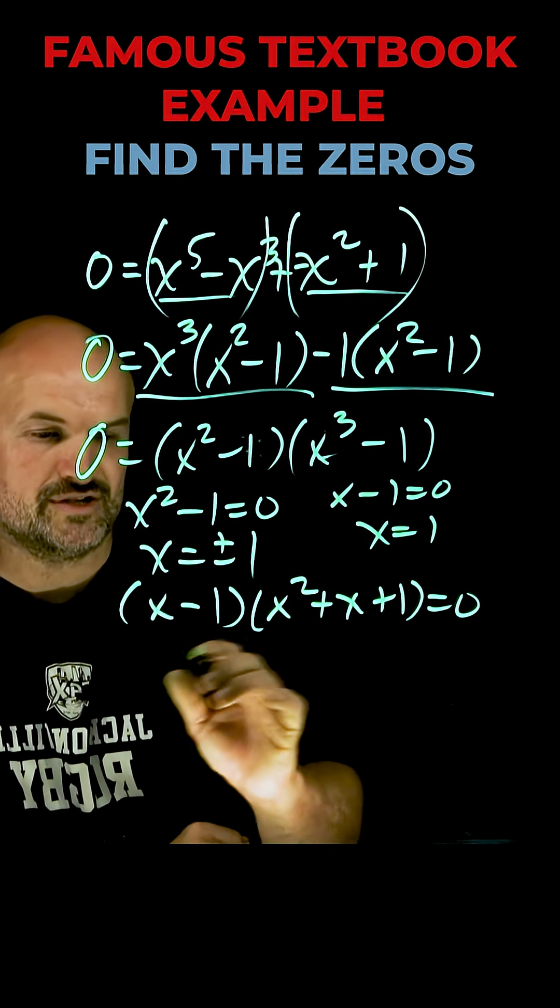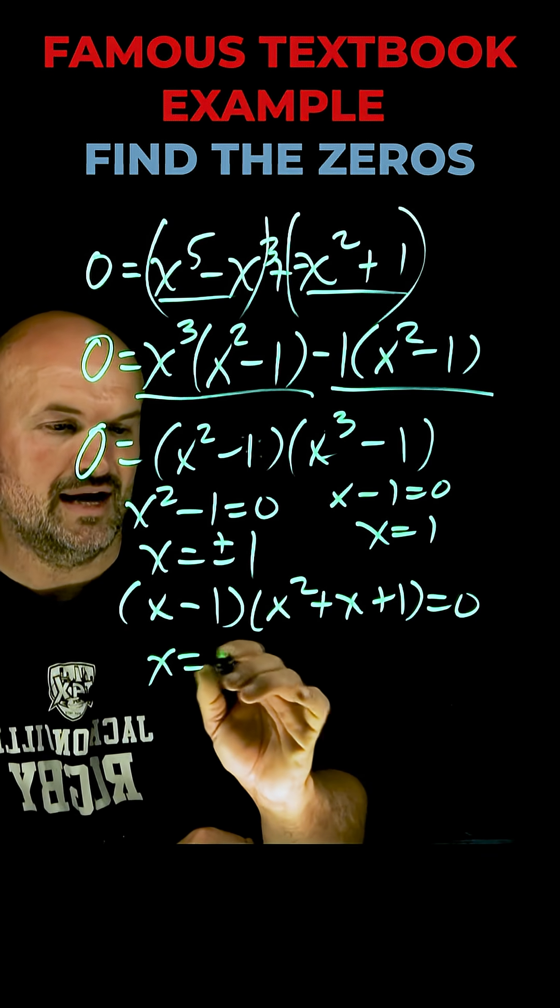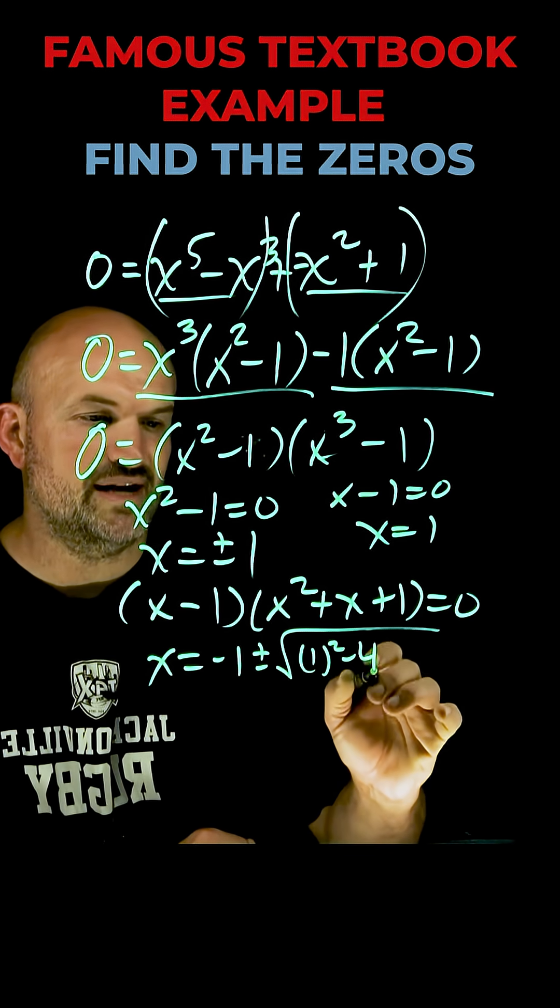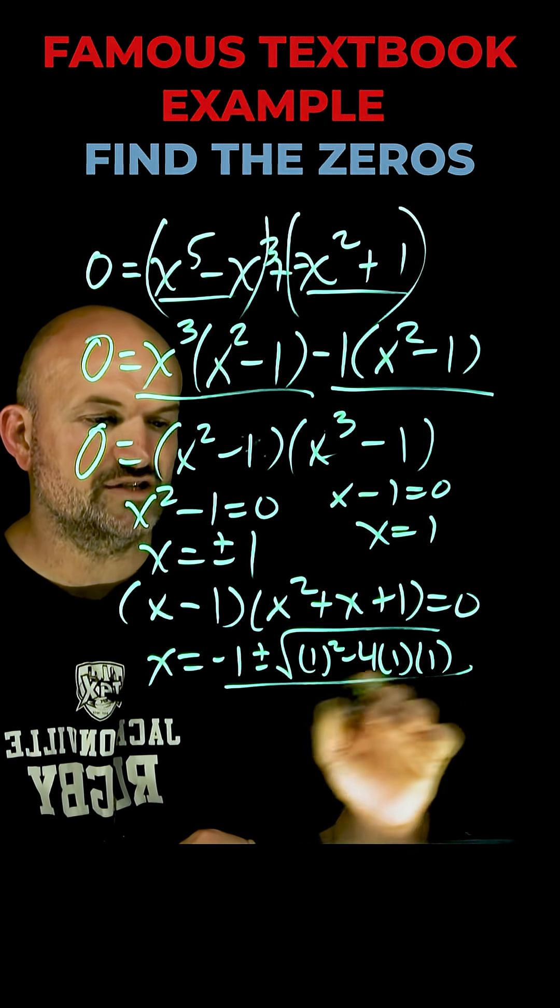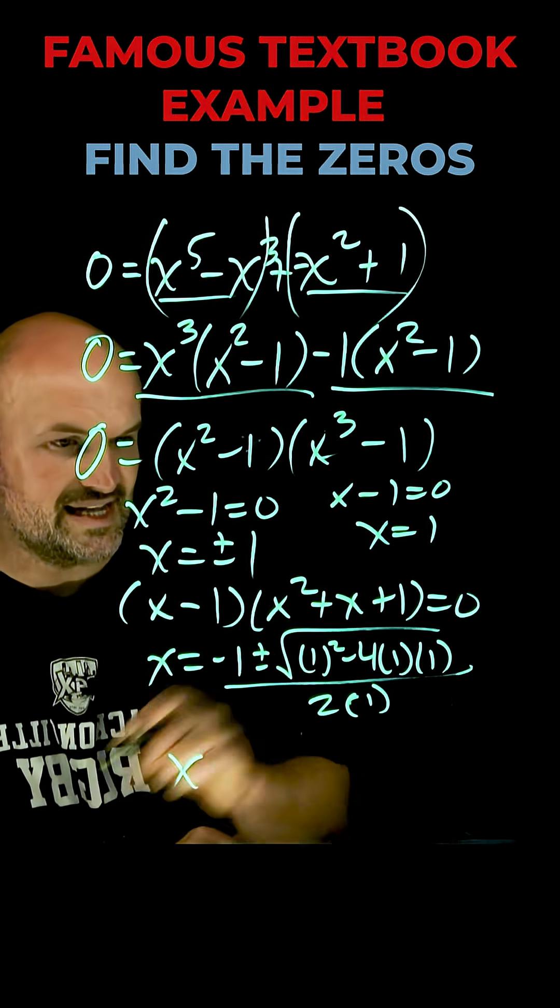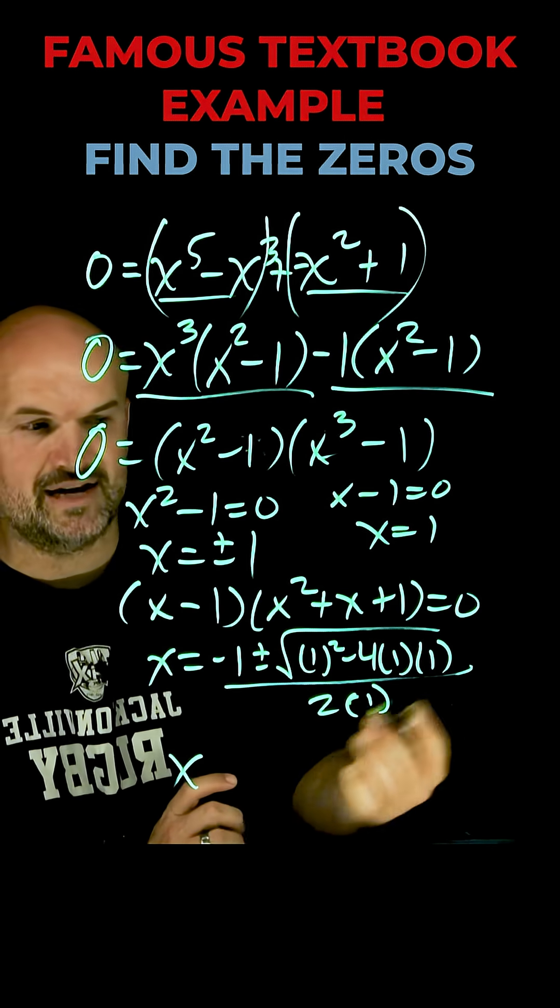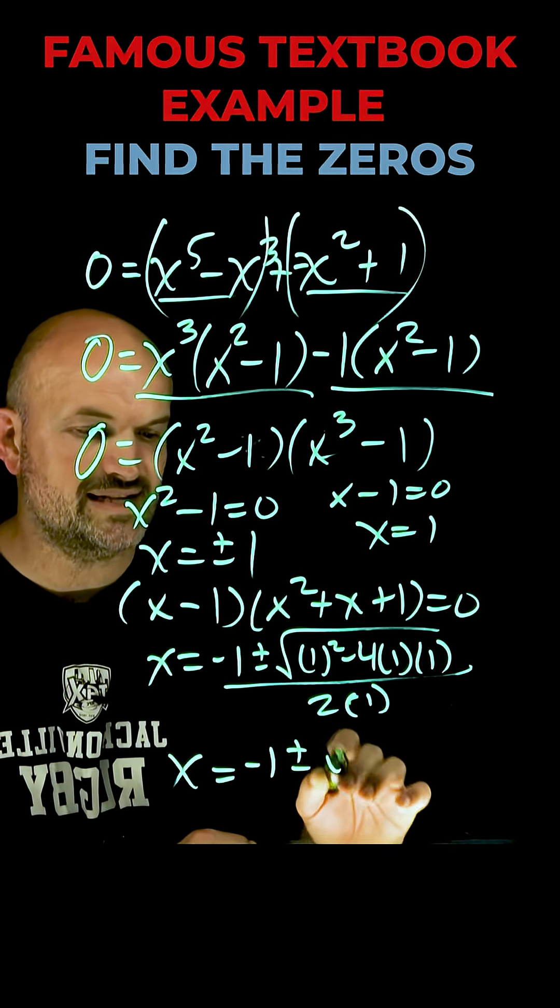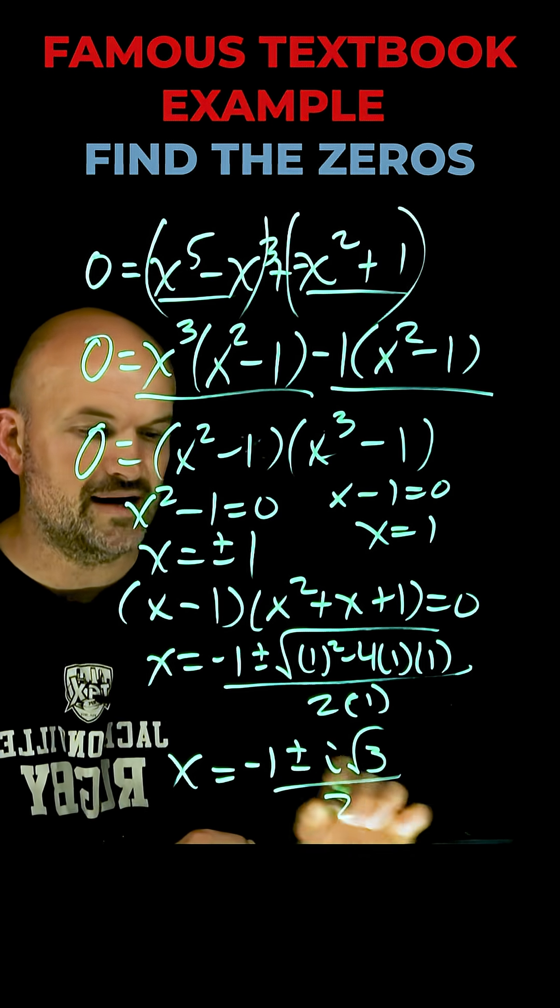But over here, we need to use the quadratic formula. So x is going to equal opposite of b plus or minus the square root of b squared minus 4ac, all divided by 2a, which is one. So in this case, one squared minus four is a negative three. Square root of negative three is going to equal negative one plus or minus i square root of three divided by two.